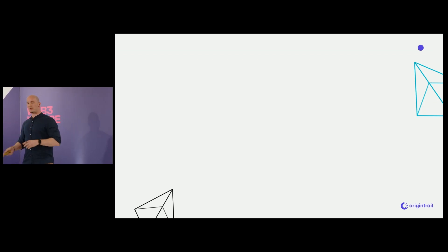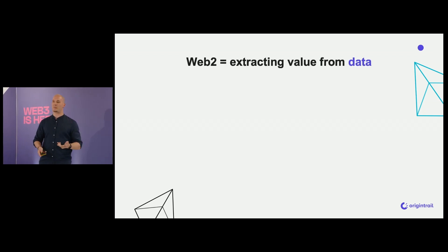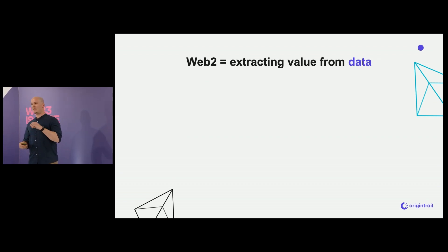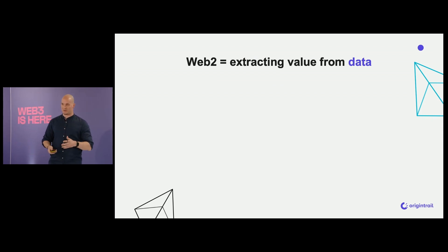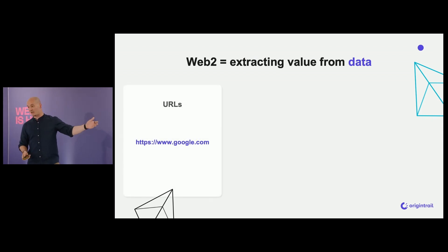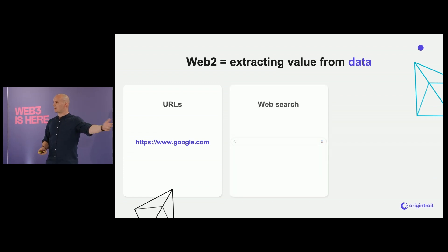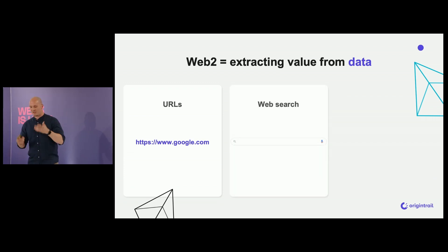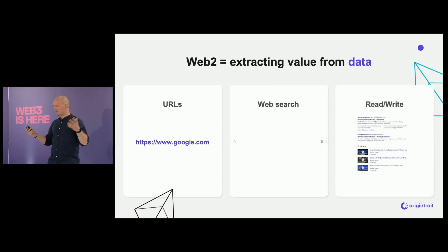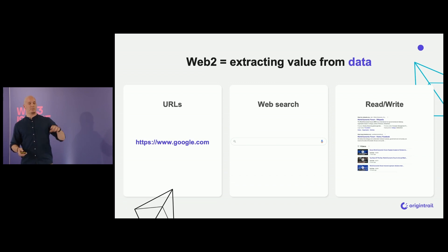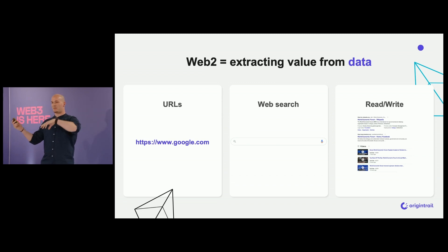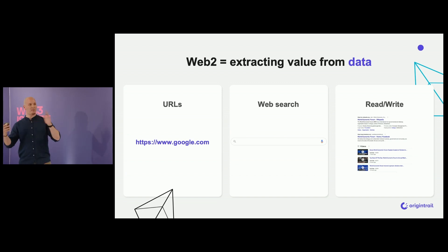Just to introduce the Web3 notion again: in Web2, we actually had a lot of extraction of value from data. The main building blocks for this were URLs, web search — Google is big for search, but generally there are very few sites without search. This search enables you to discover information which you can either read or write. That's kind of Web2 in a nutshell.